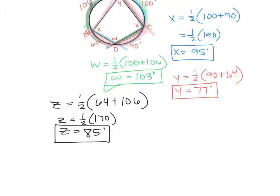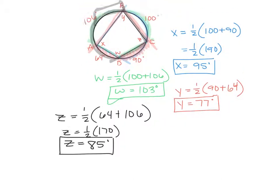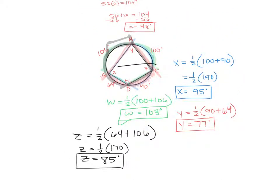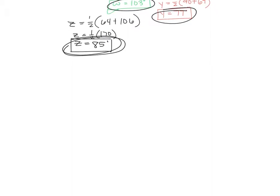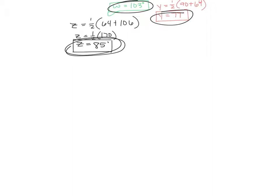Look at x and z — they add up to 180. And w and y also add up to 180. That leads into the next theorem: opposite angles across from each other like that are supplementary.